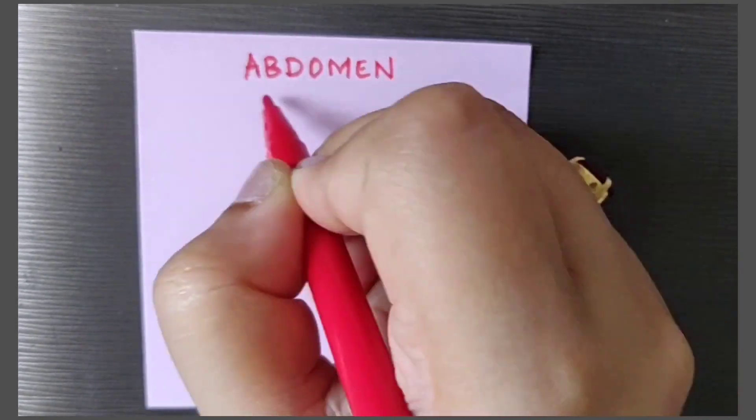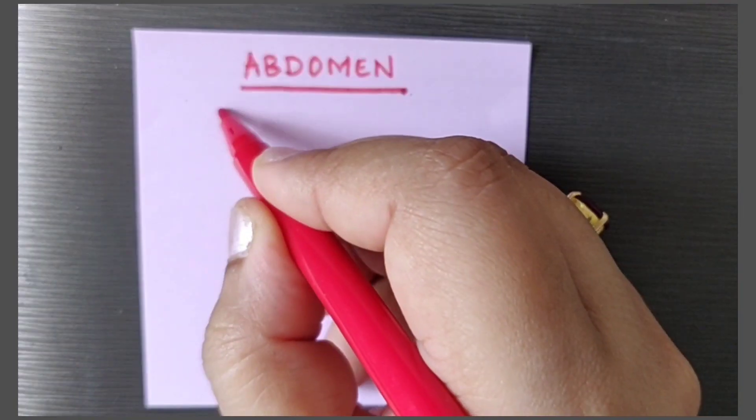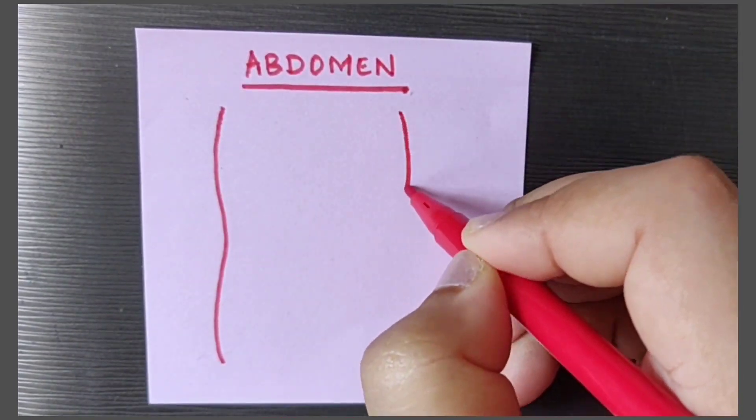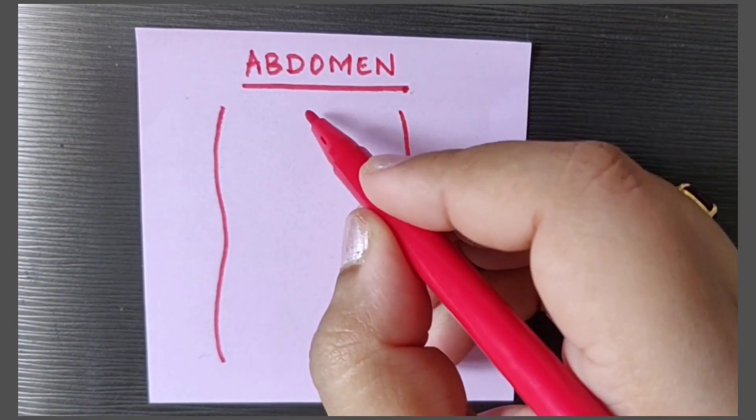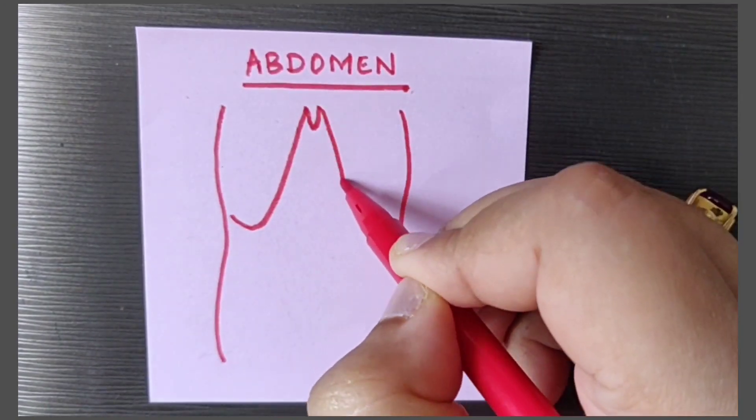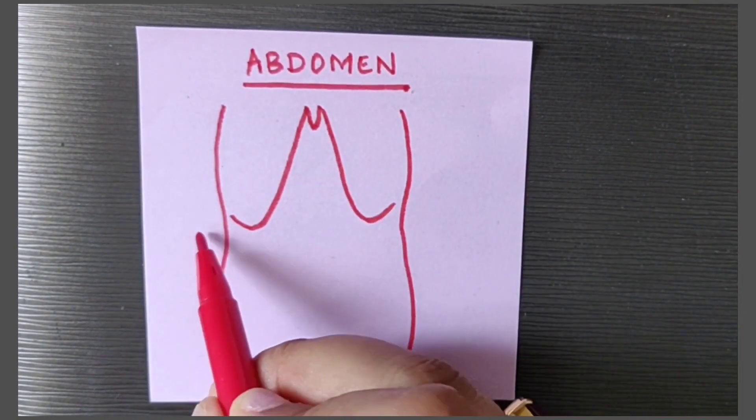Today we'll be learning about abdomen. So first we will see the landmarks of the abdomen. Here we have the xiphoid process and the right and the left costal margins.